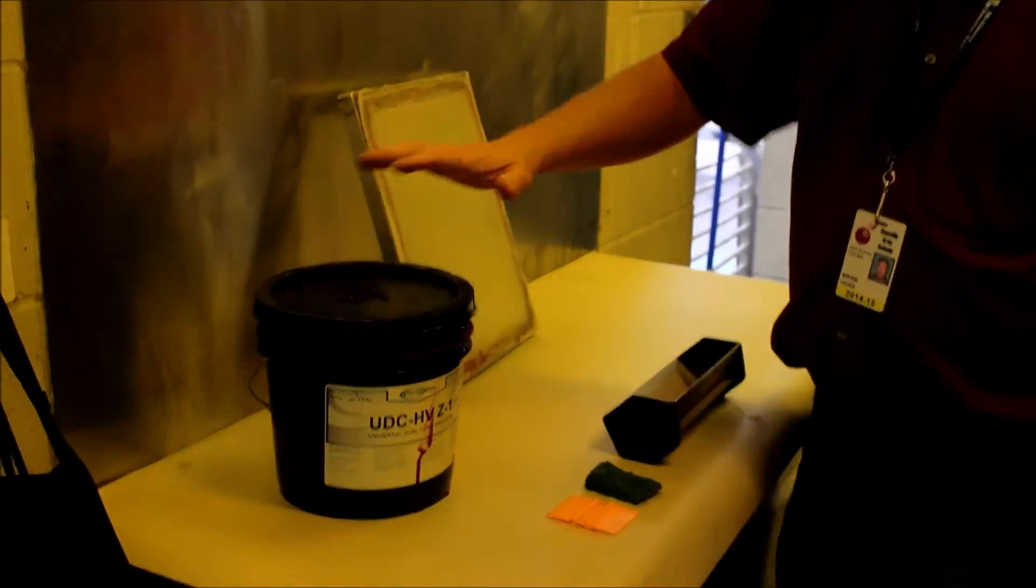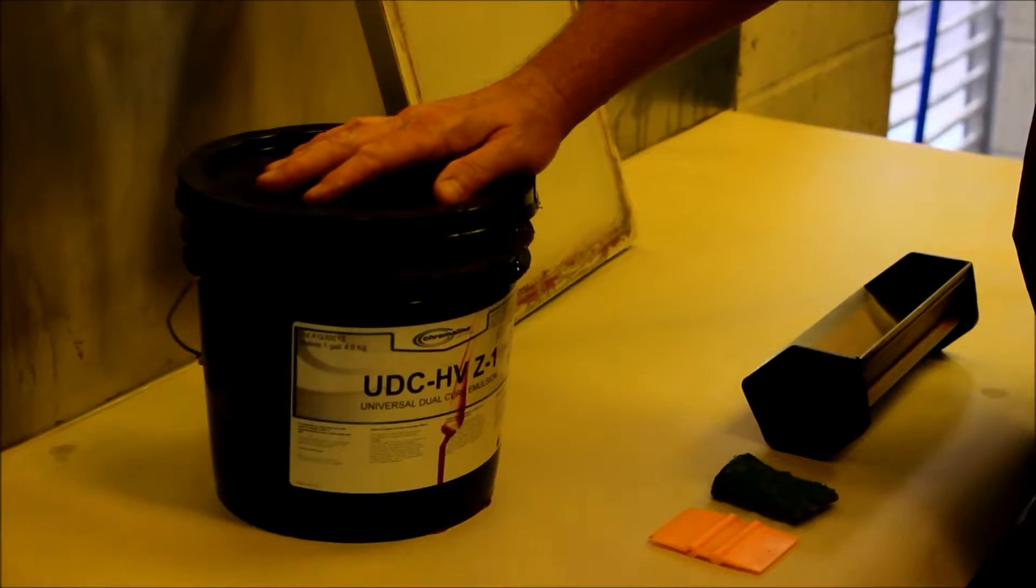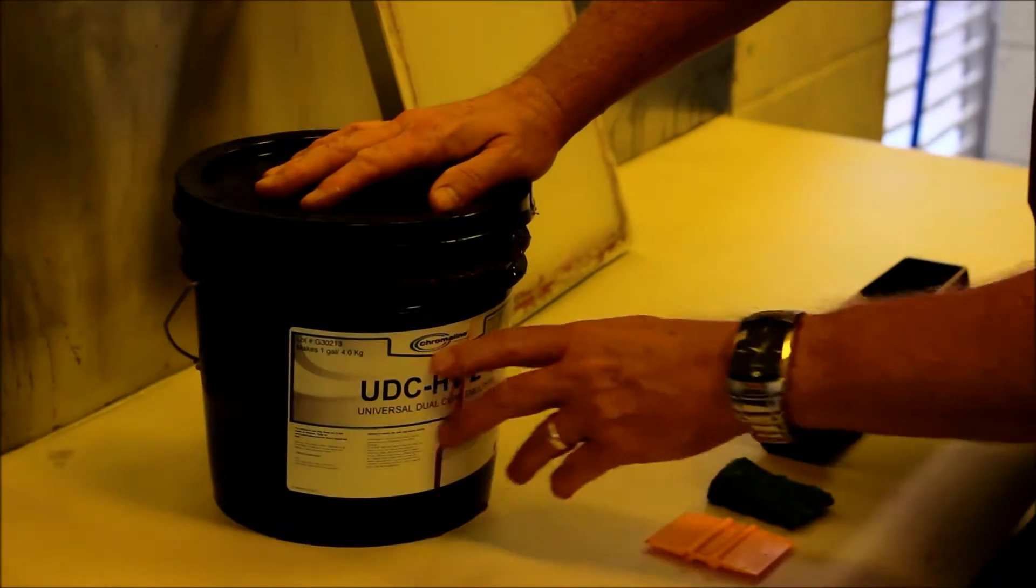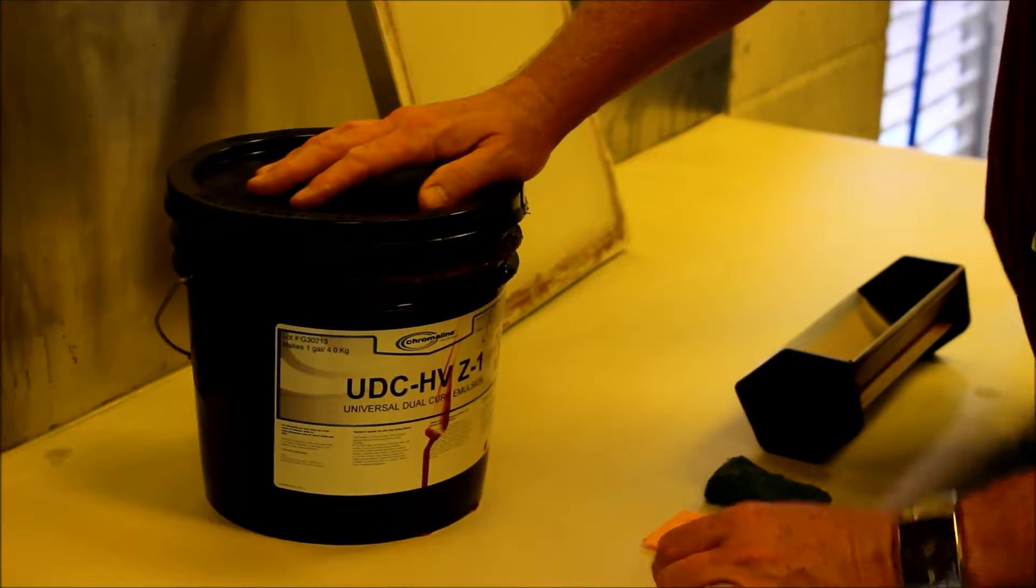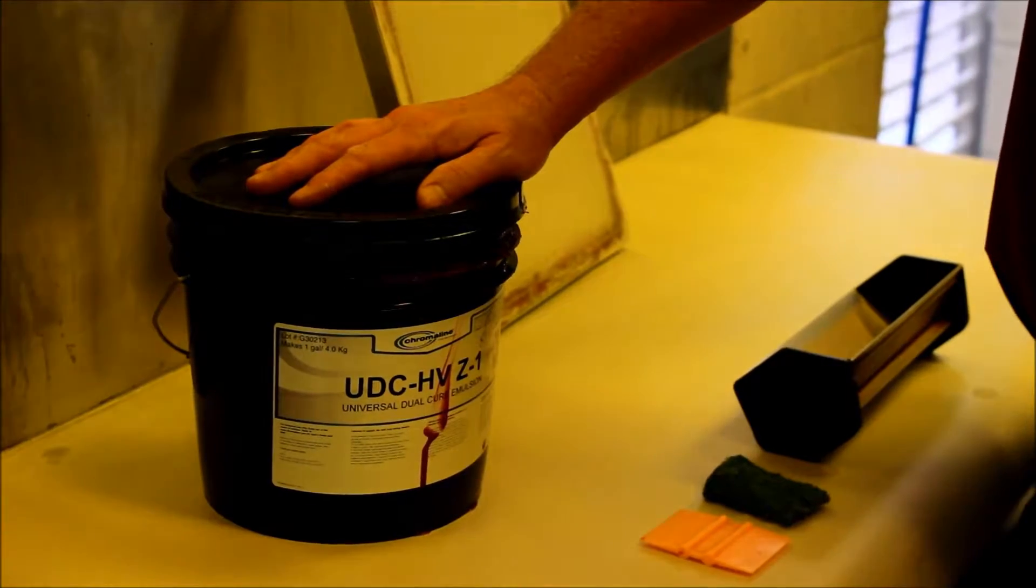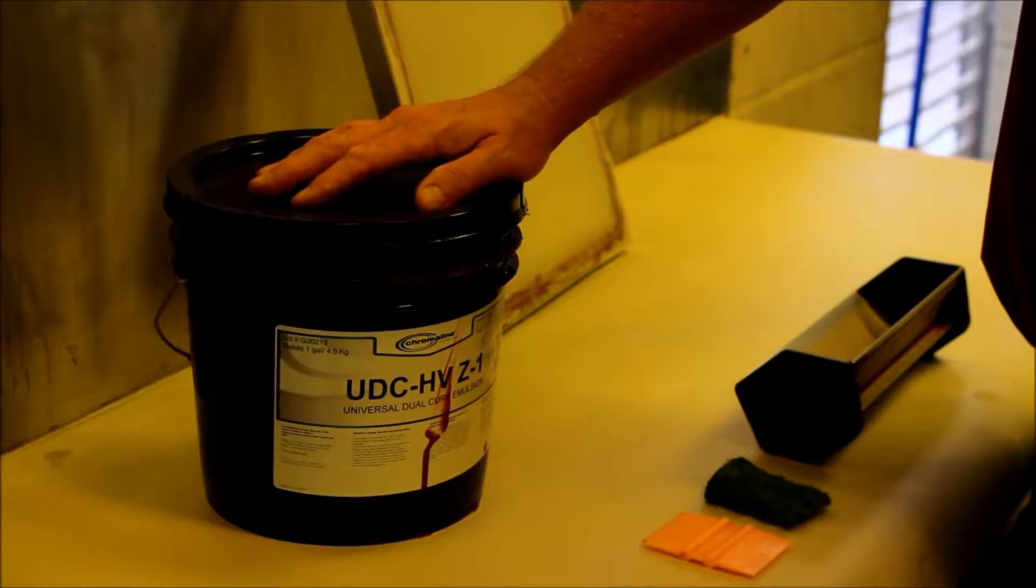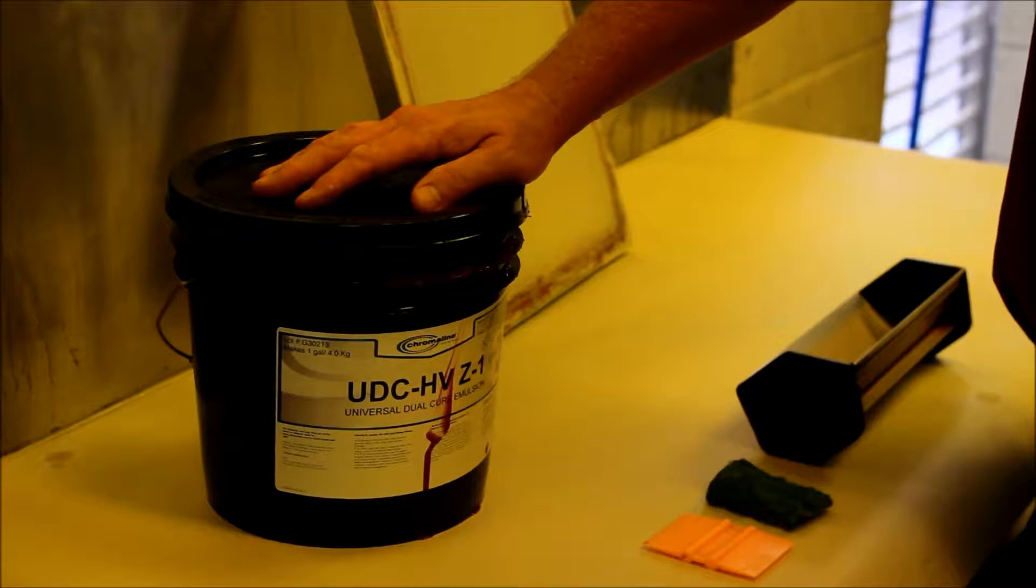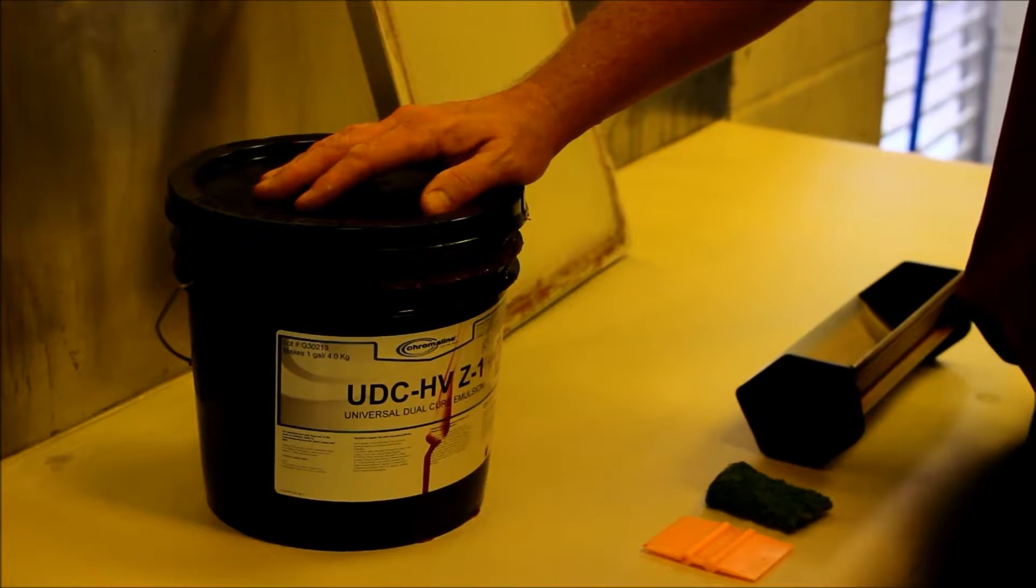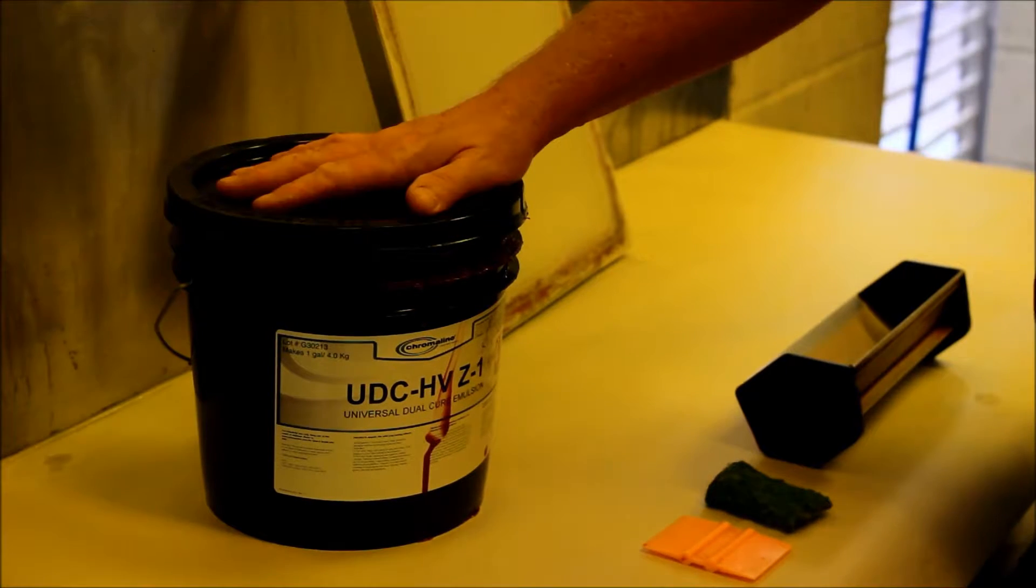Emulsion comes in a gallon container. The particular emulsion that we use is called Chromaline UDCHV Z1. It's an emulsion that's made here in Minnesota, actually in Duluth, and it's a high quality product that gives us great stencil systems.